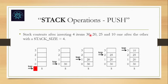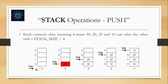Top is the pointer that points to the topmost element in the stack body. In the first diagram there are no elements, hence top is marking at minus 1. Once we start inserting elements, top will mark the topmost element. When 30 is inserted, top moves from minus 1 to the 0th location. An empty space is available and 30 is inserted there. Since 30 is the only element, it is the topmost element.